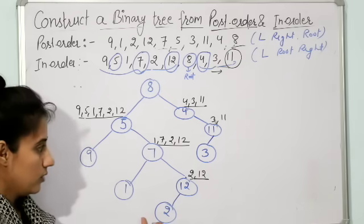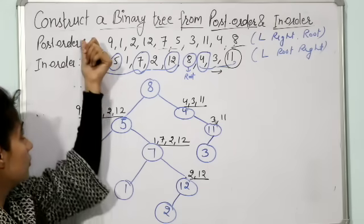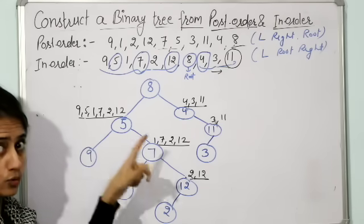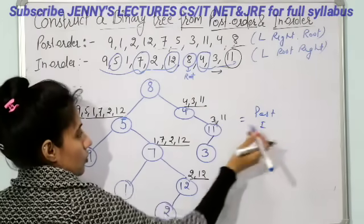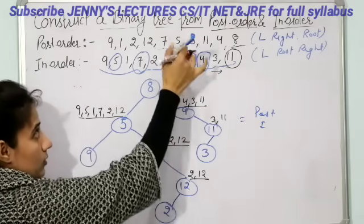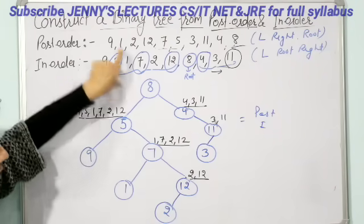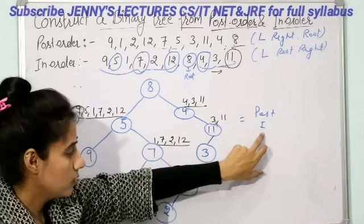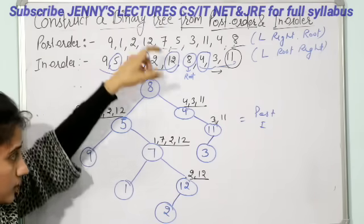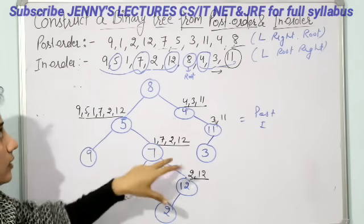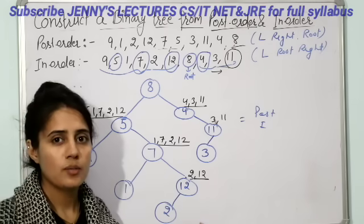Now we are done with our binary tree. This is our binary tree constructed from the given post-order and in-order traversal. To verify, you can find the post-order and in-order traversal of this tree independently, and if they match what was given in the question, then you can confirm it is the correct binary tree.